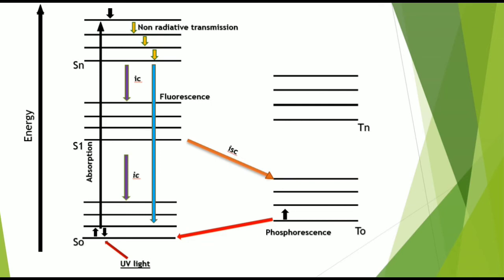Let's have a look at the Jablonski diagram. When UV light is absorbed by an electron, they get excited from the singlet ground state and reach the singlet excited state. The electrons are very unstable and hence they try to get back to the singlet ground state. This process occurs by relaxation in many ways.